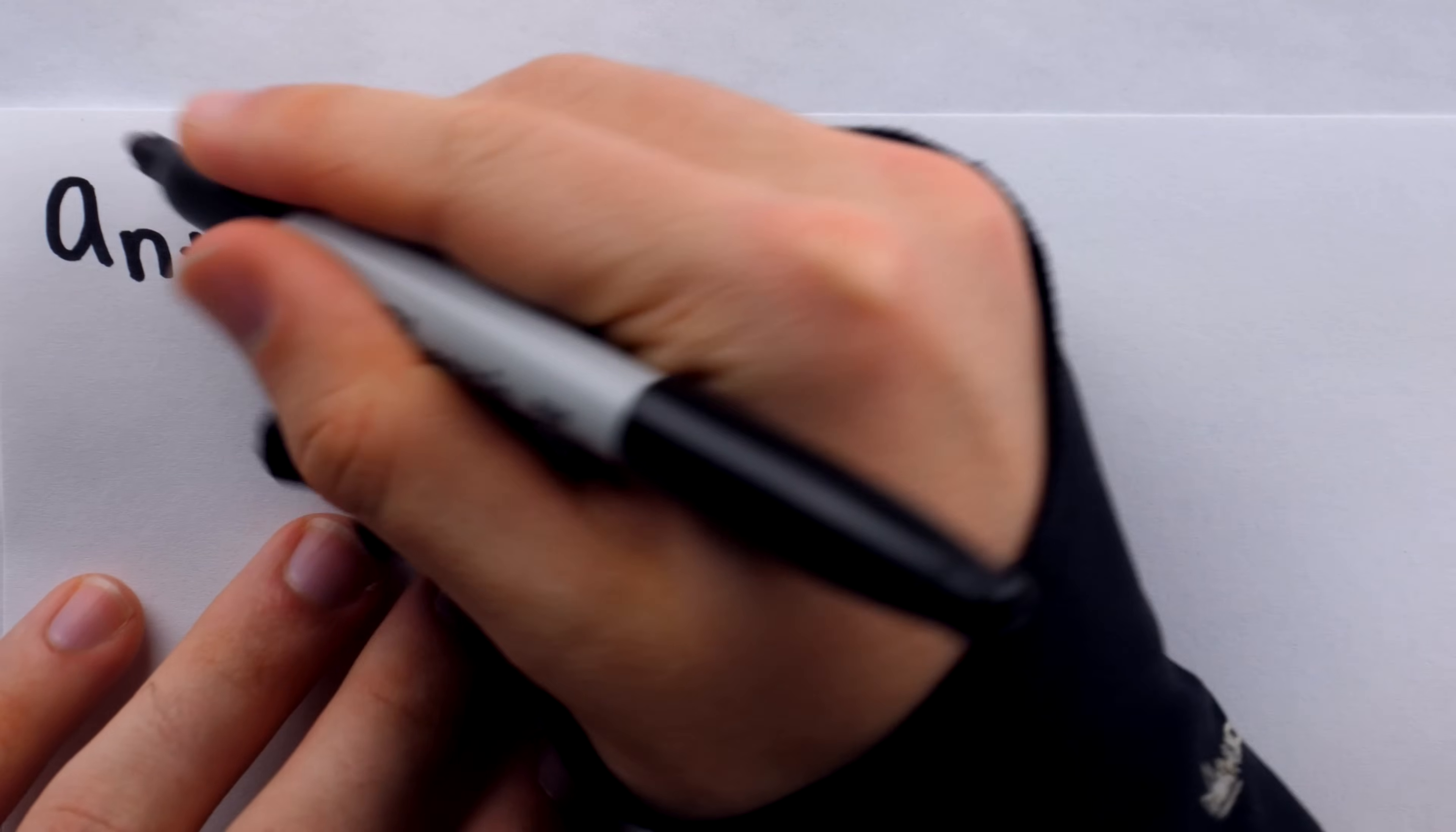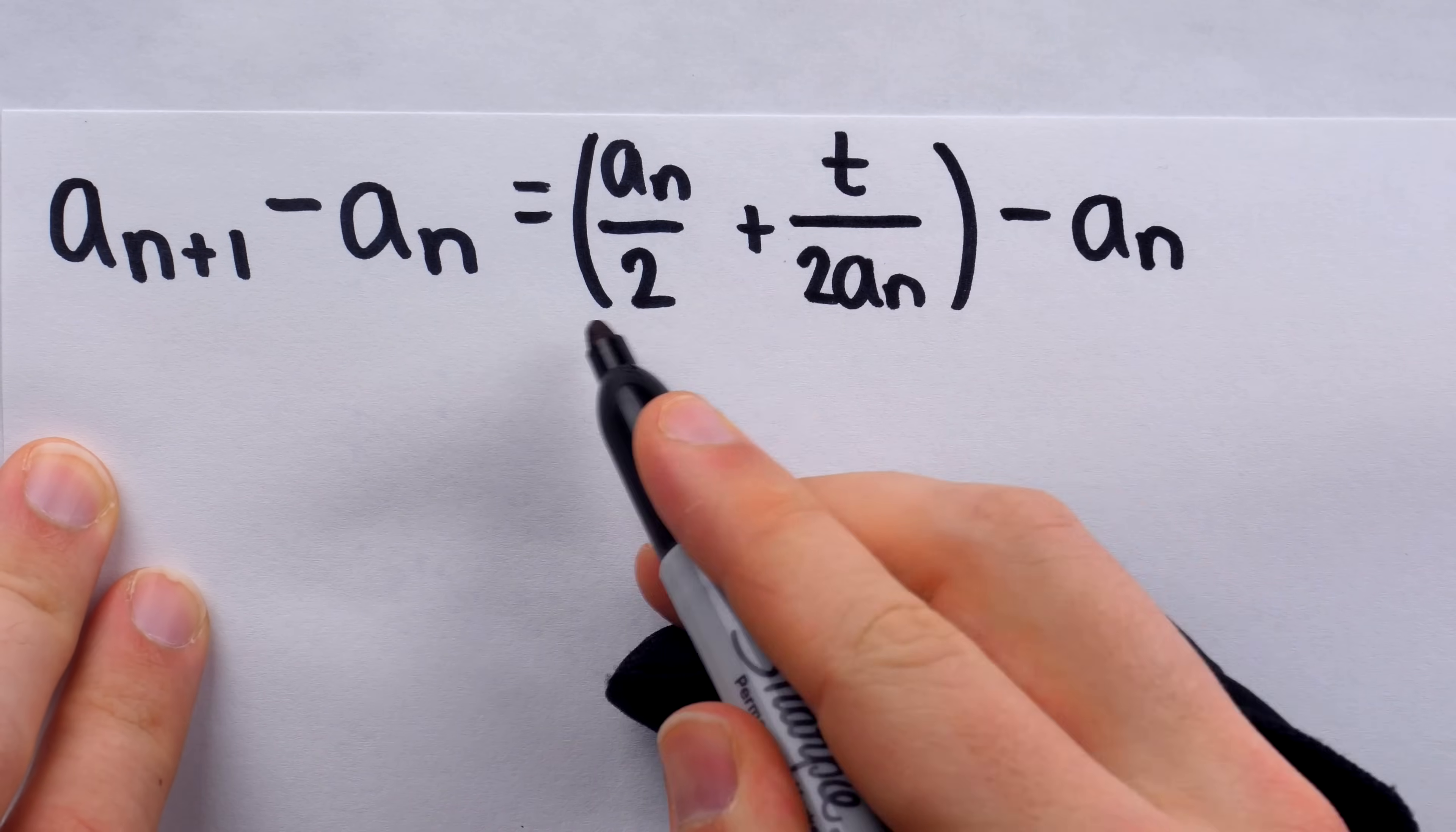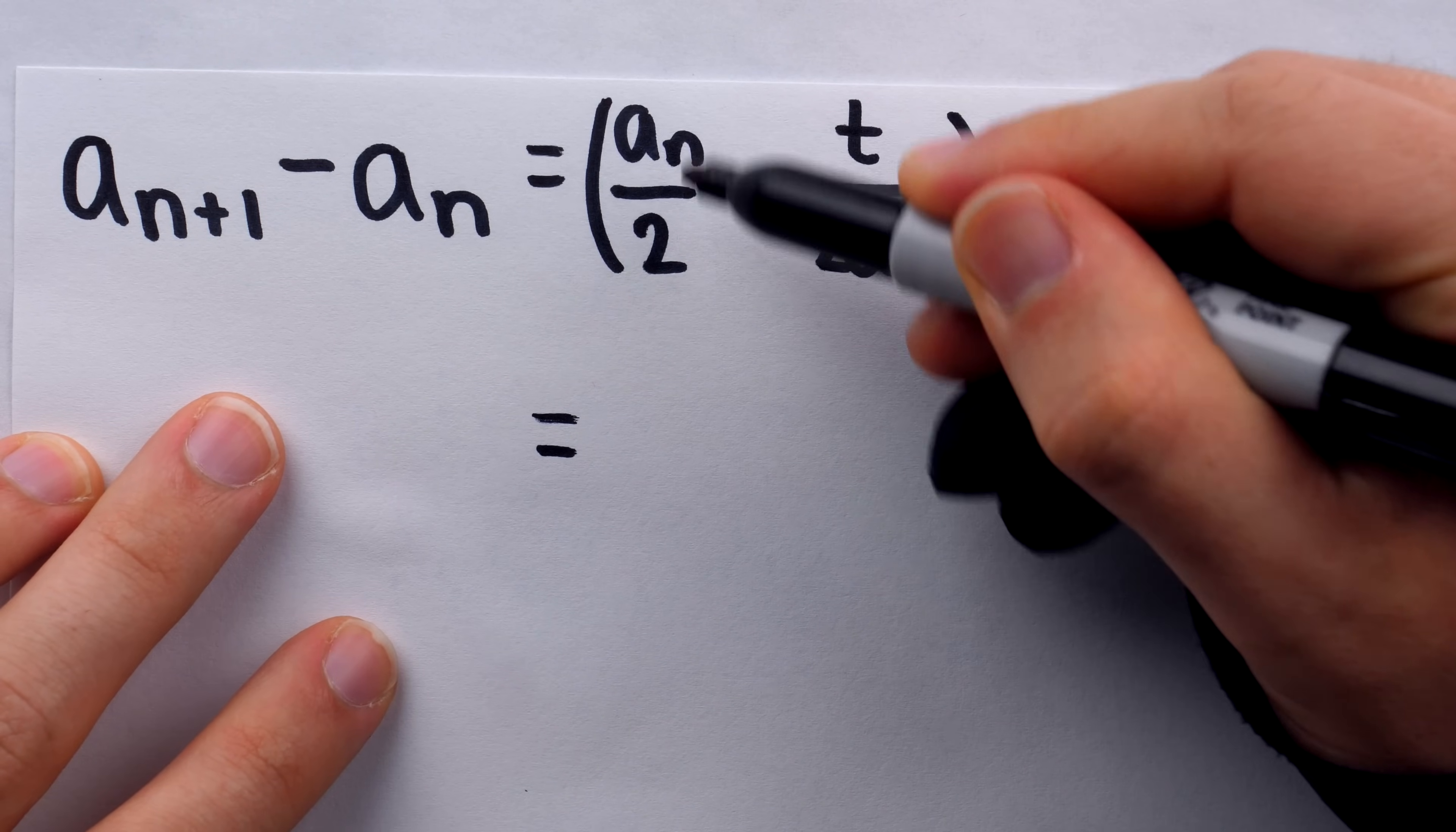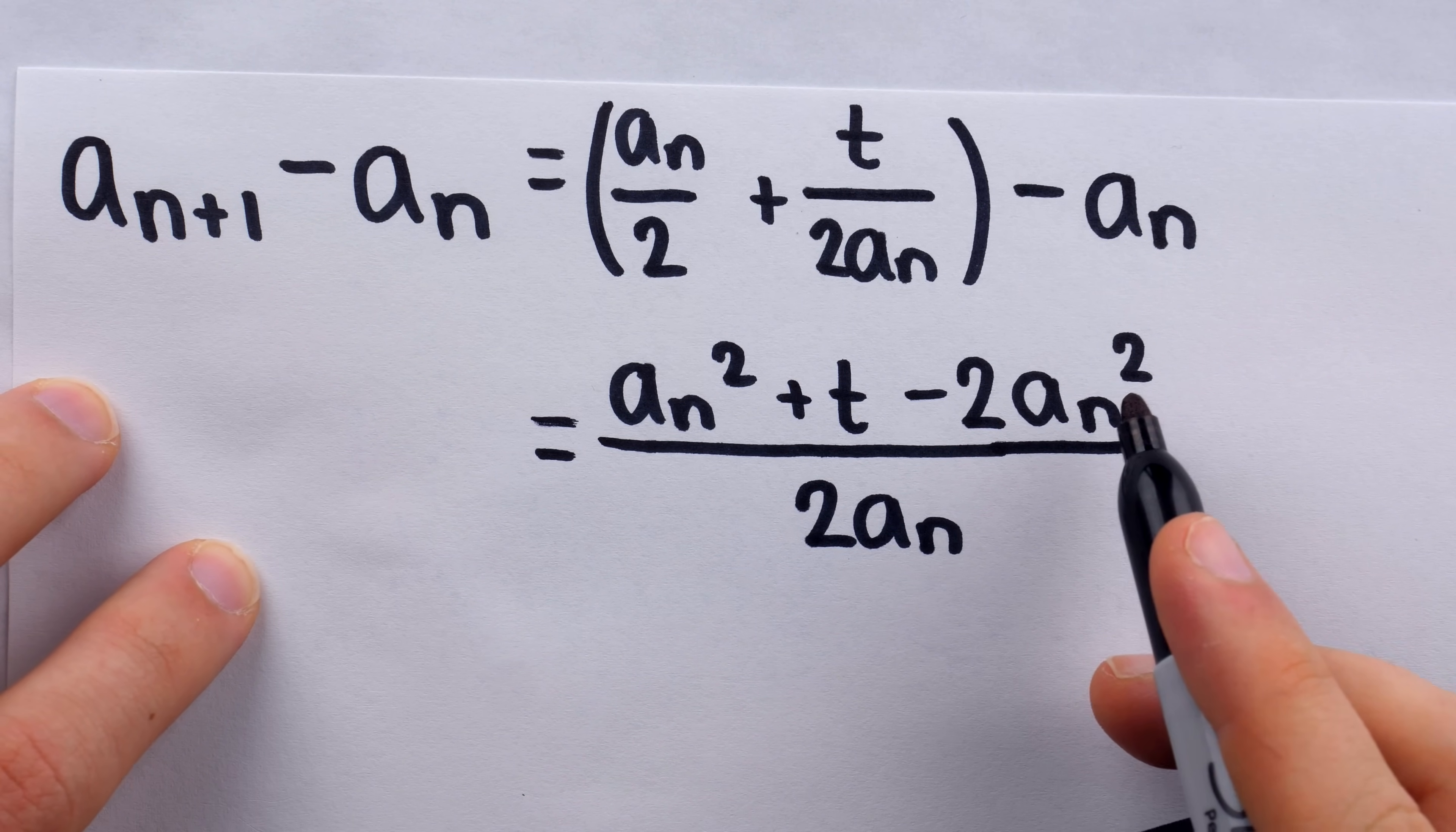To prove it, of course, we'll begin by replacing a n plus 1 with what it's equal to by that recursive formula. It's equal to half of a n plus half of t over a n. So, that's a n plus 1, and then, of course, there's our minus a n. Now, to combine all of these terms, we're going to get common denominators. So, multiply this by a n over a n, and multiply this by 2 a n over 2 a n. That gives us this, and then, of course, a n squared minus 2 a n squared is negative a n squared.